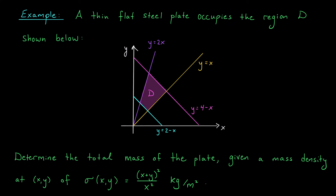I've got one more example for you. In this problem we're looking at a thin, flat steel plate occupying this region d in the xy plane — we're given some boundary curves and the region they enclose represents our plate. We'd like to determine the total mass of the plate, assuming that at the point xy its mass density is x plus y squared over x squared kilograms per meters squared.